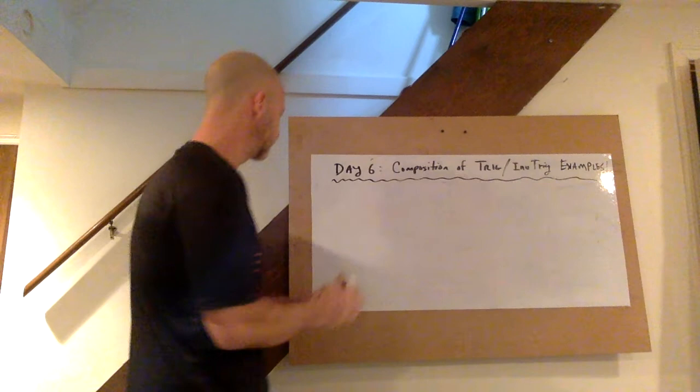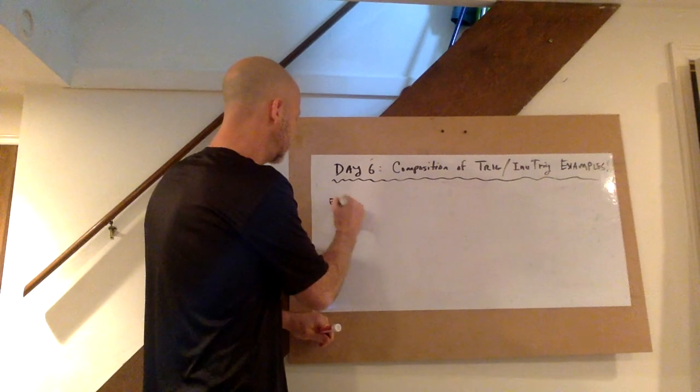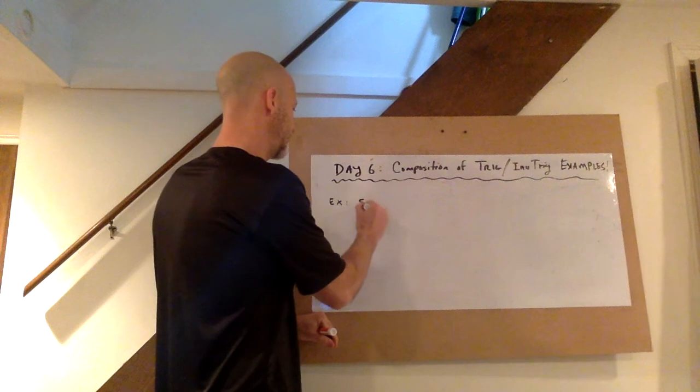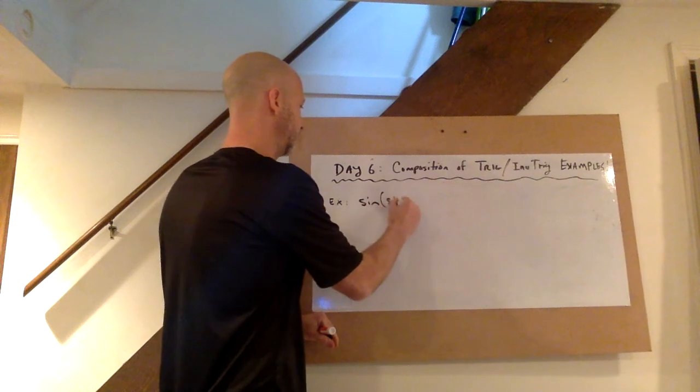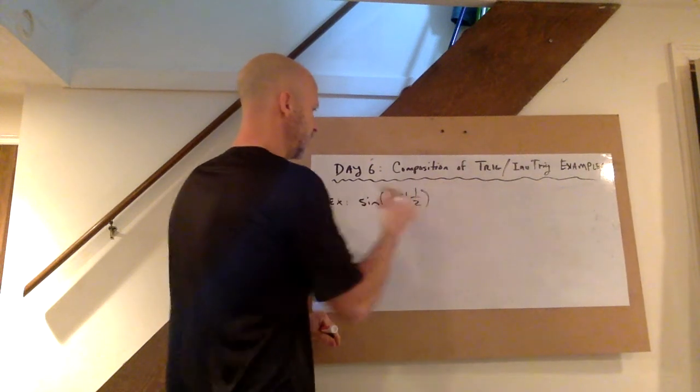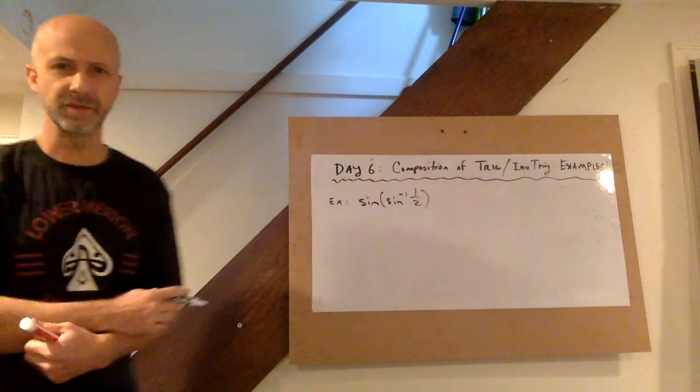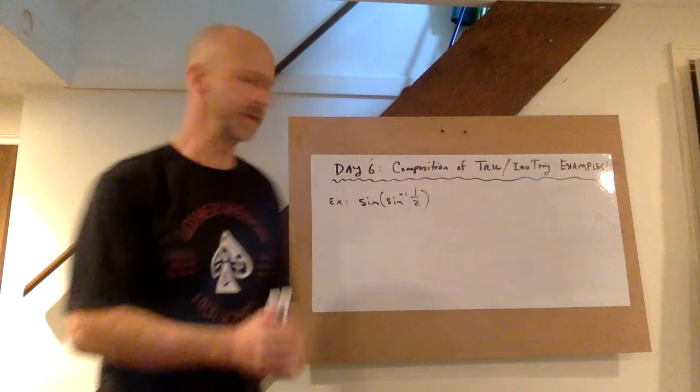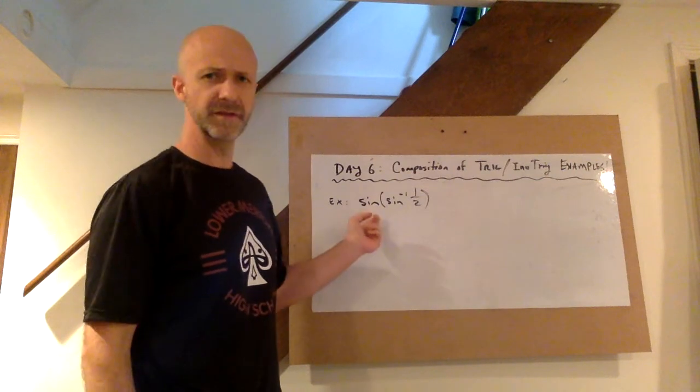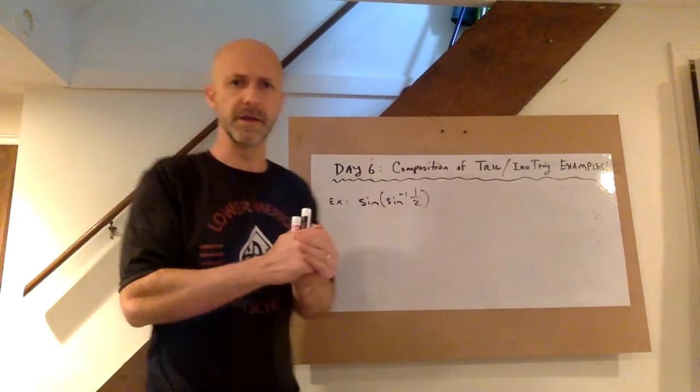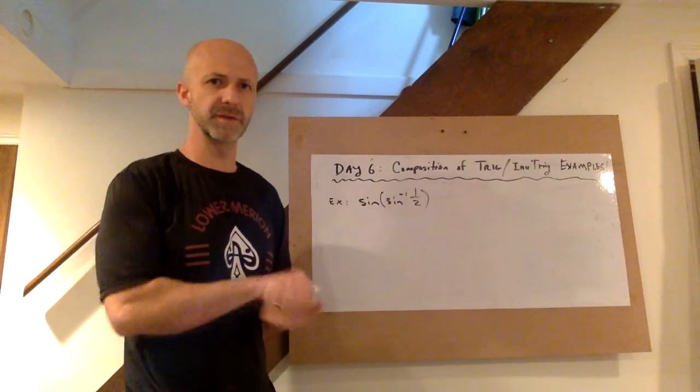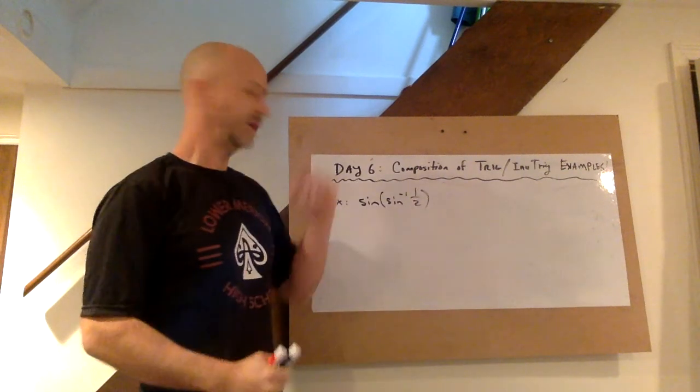We'll start with some easy examples and work our way up. Let's say we wanted to evaluate sine of sine inverse of 1/2. This is a nice example because there's a couple different ways we could do it. One way, which is sort of a shortcut, is sine and sine inverse are inverse functions. They're gonna cancel each other out just like a log and an exponential or a square and a square root. So our answer should be 1/2.